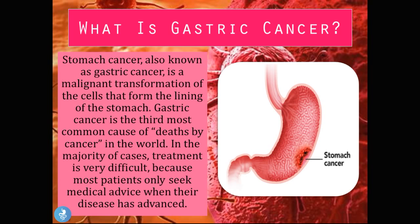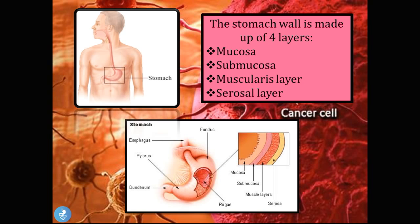In the majority of cases treatment is very difficult because most patients only seek medical advice when their disease has advanced. The stomach wall is made up of four main layers: the mucosa, submucosa, the muscular layer, and the serosal layer. Gastric cancer begins in the mucosal layer, which is the innermost layer of the stomach, where the cancer cells begin to divide.